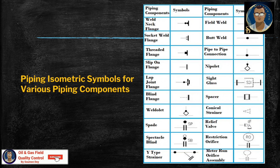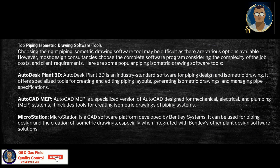We were using manual pencil, paper, and scale to draw isometric drawings. Nowadays, piping isometric drawing software is an essential tool for piping engineers and designers to create detailed isometric drawings of piping systems. These tools generate 3D representations of piping layouts, including pipe dimensions, fittings, valves, and other components. There are many piping isometric drawing software programs available in the market, which makes the task of the piping designer very easy.